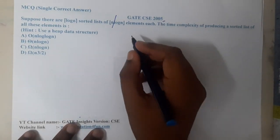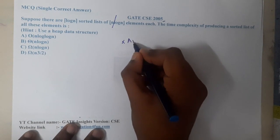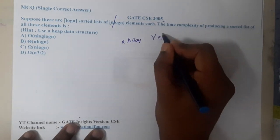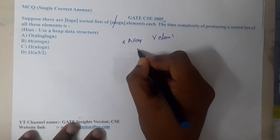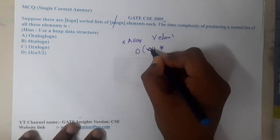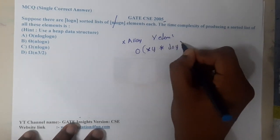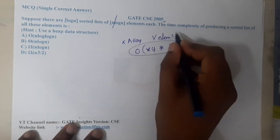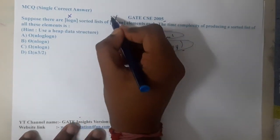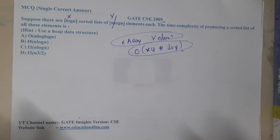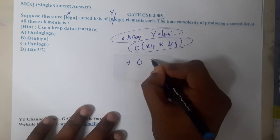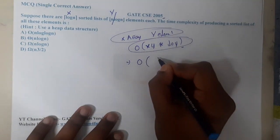We can merge x arrays, each with y elements, in O(x·y · log y). Using this complexity you can merge these arrays. Here x = log n and y = n/log n, which maps exactly to the values in this question.